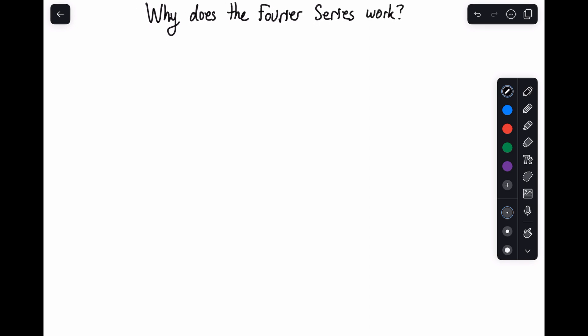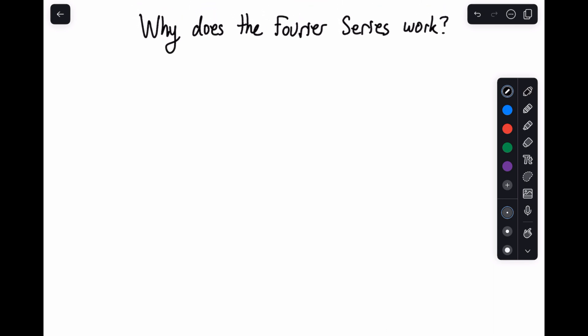The main thing has to do with orthogonality, but what I want to do is introduce the Fourier series a slightly different way. We've already talked about the intuition behind it and then introduced it, but now I want to explain the mechanics now that you've seen it. So if you remember, what you get is c sub k is equal to the integral from 0 to T, with 1 over T out in front, and this is going to be s of t times e to the minus j 2 pi k t over big T dt.